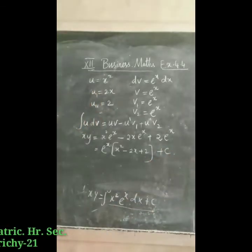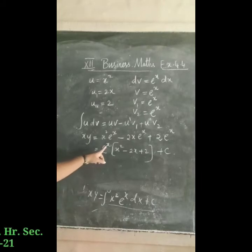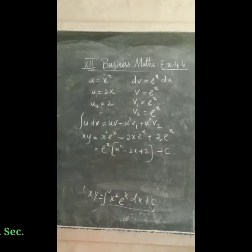The answer for the fifth question is: xy = e^x(x² − 2x + 2) + c.